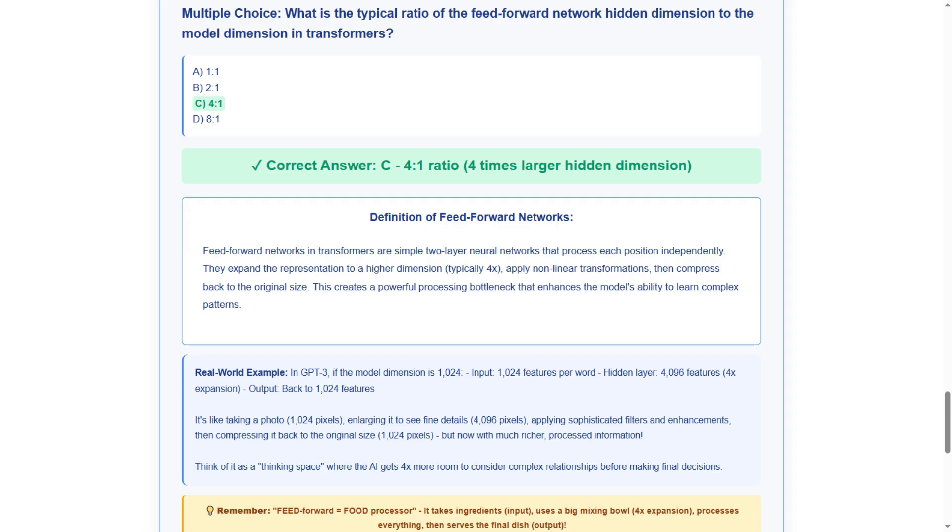Feed-forward networks in transformers are simple two-layer neural networks that process each position independently. They expand the representation to a higher dimension, typically 4 times larger, apply non-linear transformations, then compress back to the original size. This creates a powerful processing bottleneck that enhances the model's ability to learn complex patterns. In essence, it's expansion compression processing.